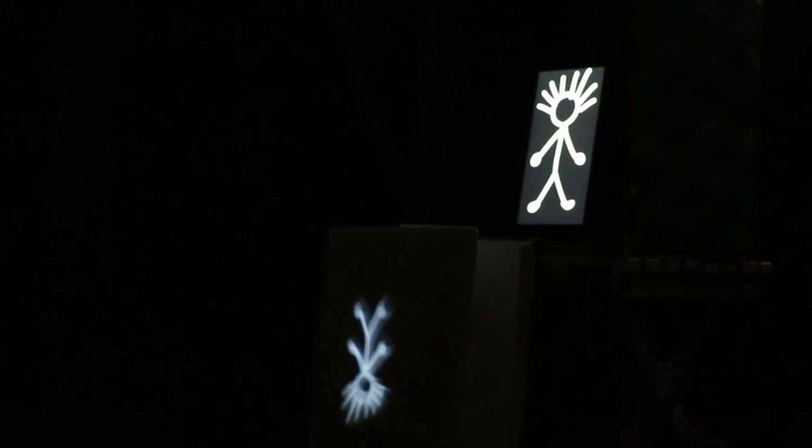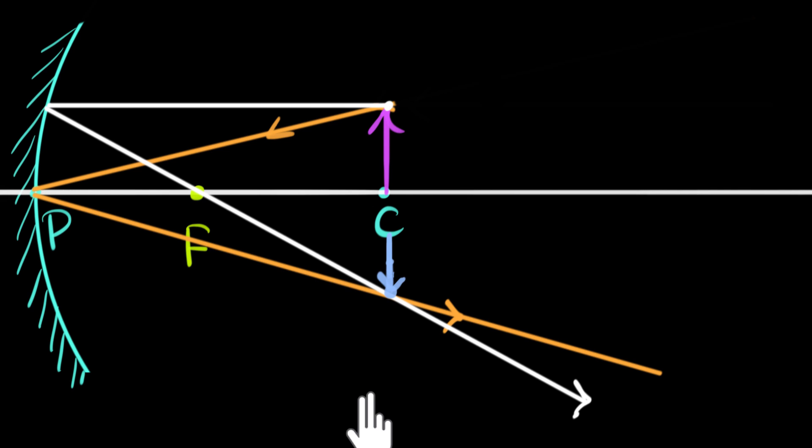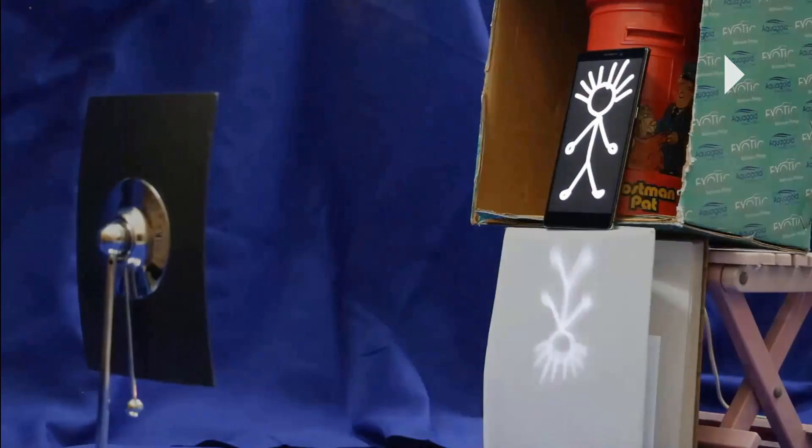If we continue bringing the object closer and place it right at C, the image is also formed at C. The object and image meet each other there, and the image height is exactly the same as the object height. In the physical setup, with the object at C, you can see the screen is right below it and both have exactly the same size.